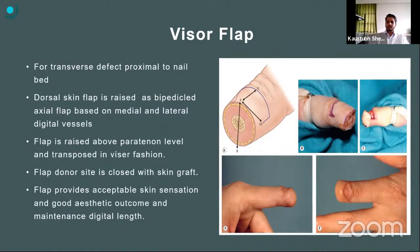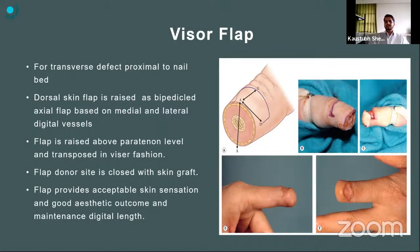A different design is the visor flap — shaped like a visor. It is used for dorsal oblique or transverse defects of the fingertips. A dorsal skin flap is raised as a bipedicled skin flap based on medial and lateral neurovascular digital vessels. The flap is raised above the peritenon level and transposed in a visor fashion. The donor site is closed with a skin graft. The only disadvantage is that the dorsal defect needs skin graft coverage, requiring an additional donor site.